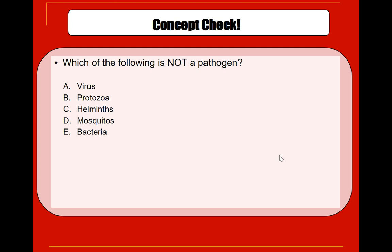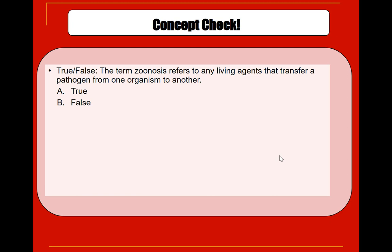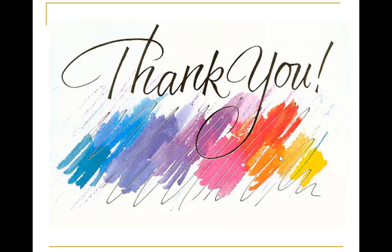For the concept check: Which of the following is not a pathogen? Answer: mosquito — a mosquito is a vector, not a pathogen. Which answer choice is not a vector? Answer: birds — birds are a reservoir. True or false: the term 'zoonosis' refers to any living agent that transfers a pathogen from one organism to another? False — that definition describes a vector, not zoonosis, which specifically involves animal-to-human disease transmission. Thank you, that's all.